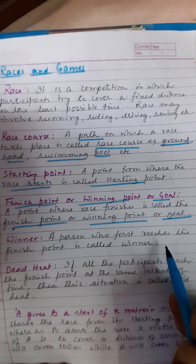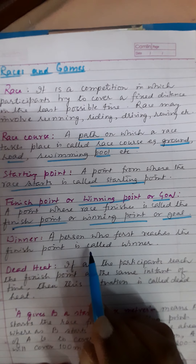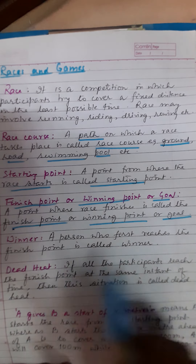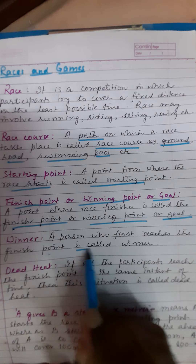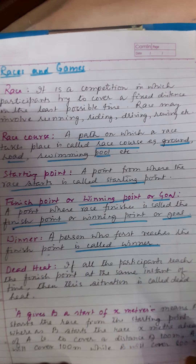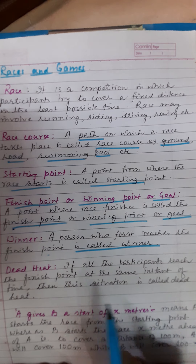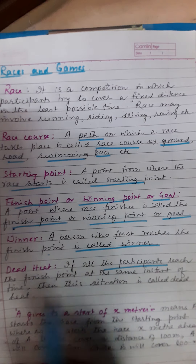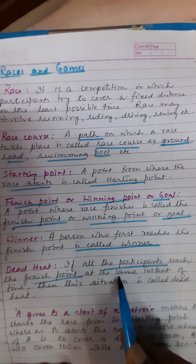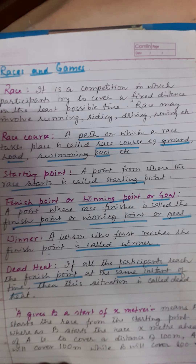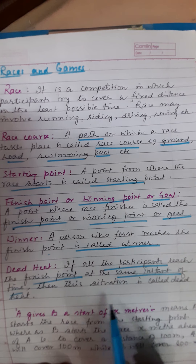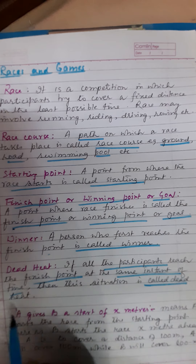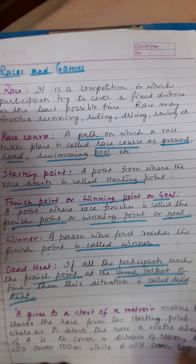Winner: a person who first reaches the finish point — who comes first to the finish point — is called the winner. Dead heat: if all the participants reach the finish point at the same instant of time, at the same time, that situation is called a dead heat.